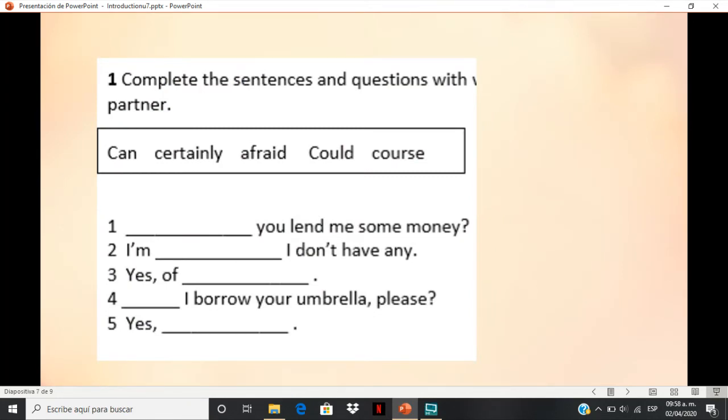So, for the first one, maybe we can say, can you lend me some money or could. It is possible also, right? Could you lend me some money or can you lend me some money? Number two, I am afraid I don't have any. Number three, yes, of course. Number four, we can say, can, can I borrow your umbrella, please? Or, could, could I borrow your umbrella, please? And number five, yes, certainly.